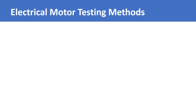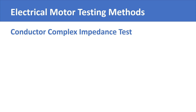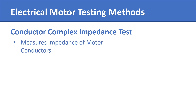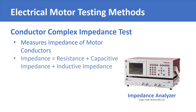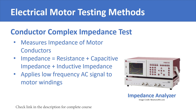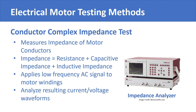Yet another test is the conductor complex impedance test. It measures the impedance of all the conductors in the motor by using a special tool called an impedance analyzer. Impedance is the sum of resistance, capacitive impedance, and inductive impedance. In this test, a low frequency alternating current signal is applied to the motor windings and the resulting current and voltage waveforms are analyzed. The results reveal any fault in the motor conductors, mainly windings.